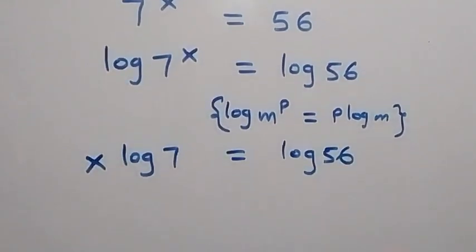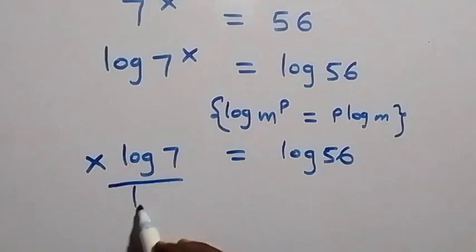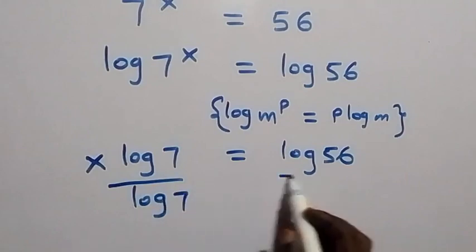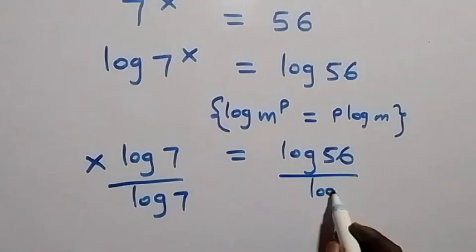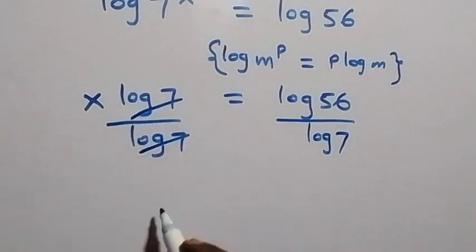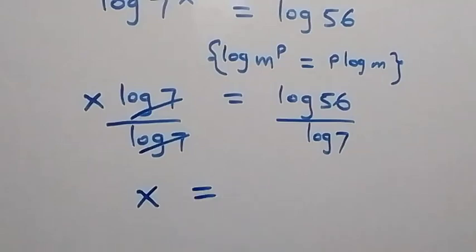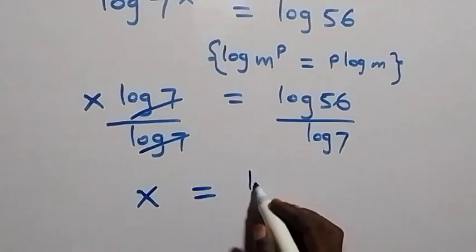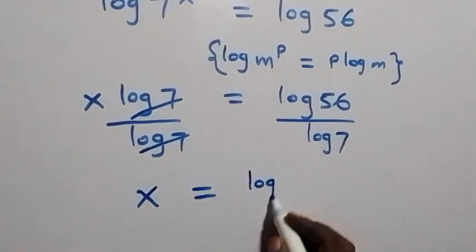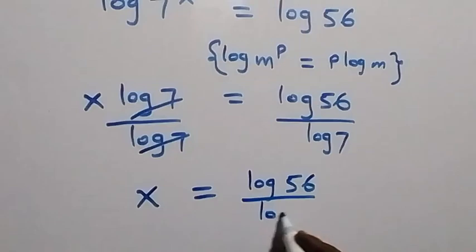Next step: let's divide both sides by log 7. We divide this side by log 7 and also this side by log 7. The log 7 terms cancel each other, and we have x equals log 56 over log 7.